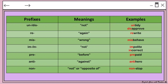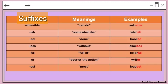'Im-' or 'in-' also means 'not' — for example, 'impolite' means not polite, and 'incorrect' means not correct. 'Pre-' means 'before' — so 'prepaid' means you have paid before. 'Anti-' means 'against,' as in 'anti-hero.' 'Non-' means 'not' or 'opposite of' — for example, 'nonstop.' These are some of the prefixes, their meanings, and examples.